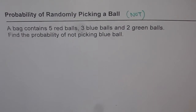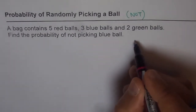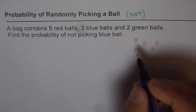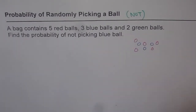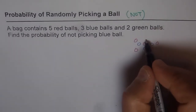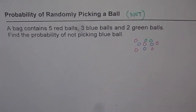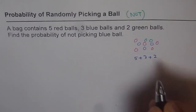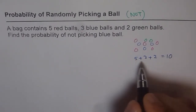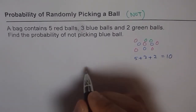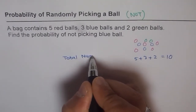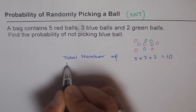Let's start with making a type of diagram. How many red balls do we have? We have five red balls. So let's randomly put five red balls. We got five red balls. How many blue balls? Three. So let's put three in our bag and there are two green balls. So in all, we have five plus three plus two and that gives us ten. This is the total number of possible outcomes.